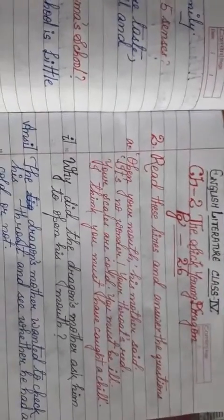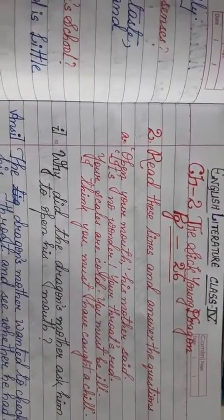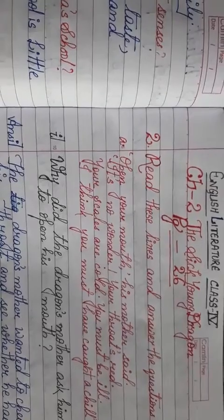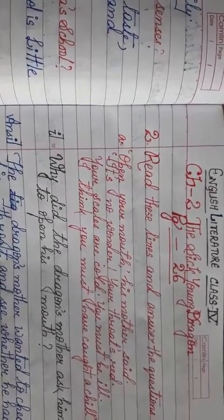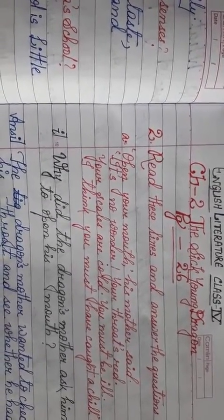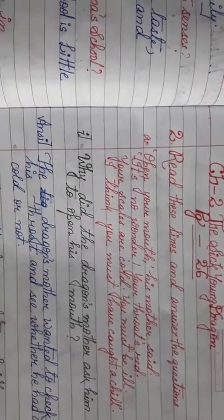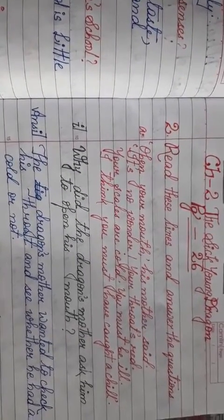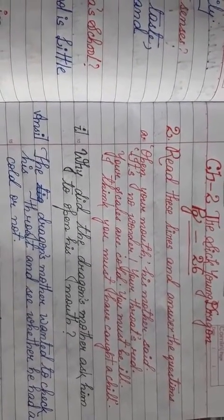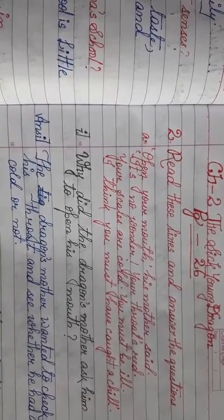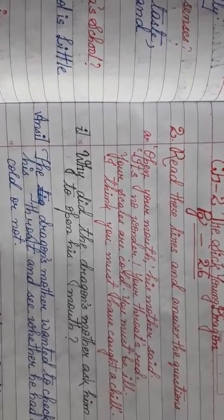Now children, we will do our reference to context question and answers. That is present on page number 26 of chapter 2, The Sick Young Dragon. You have to write this part in your English literature copy with good handwriting. Okay, let's start.